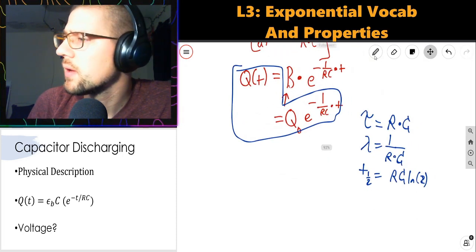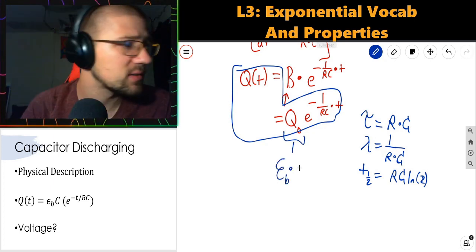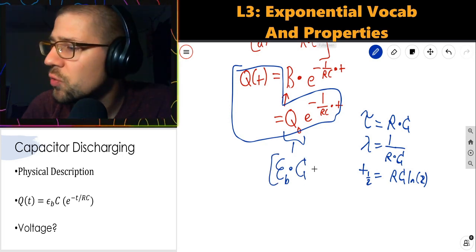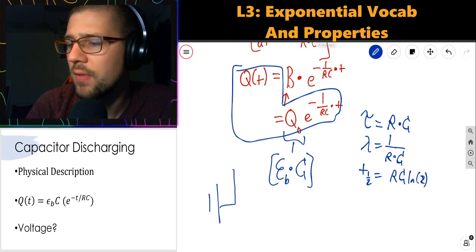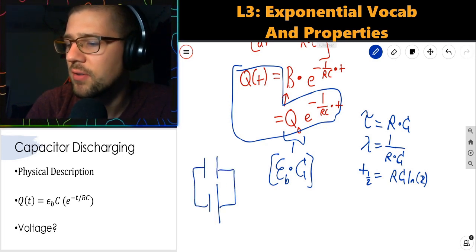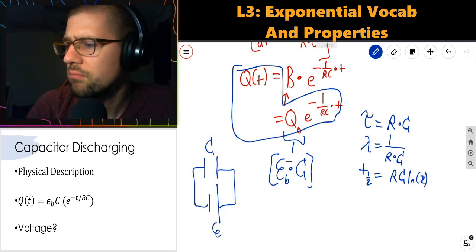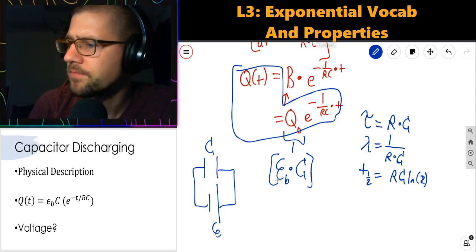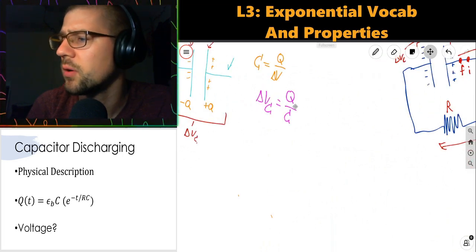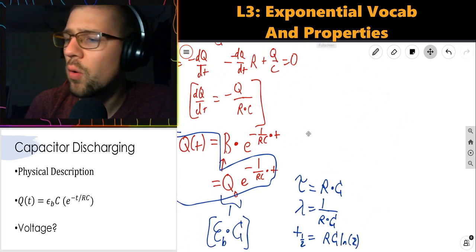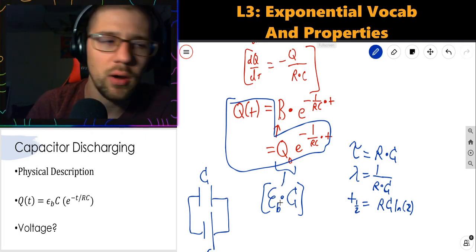A few other things to note: in this class, you'll sometimes see Q_naught written as battery voltage times capacitance, assuming the capacitor was charged initially by a battery. The amount of charge initially deposited is V_battery times capacitance, which follows from our definition of capacitance: ΔV across the capacitor is Q/C. So the equation for discharging a capacitor is Q(t) = Q_naught · e^(−t/RC), or equivalently with Q_naught = V_b · C.